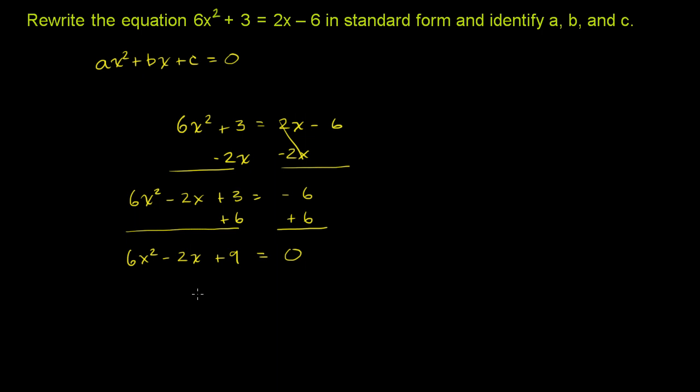Let's make sure we're in standard form. All of our non-zero terms are on the left-hand side, we have 0 on the right-hand side, and we have the x squared term first, then the x to the first power term, then the constant term. So we are in standard form.